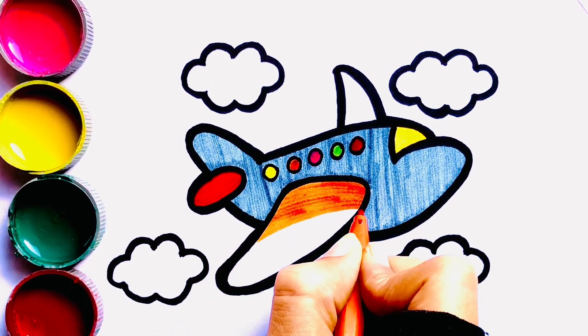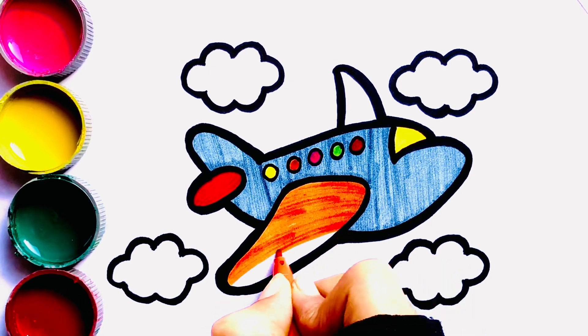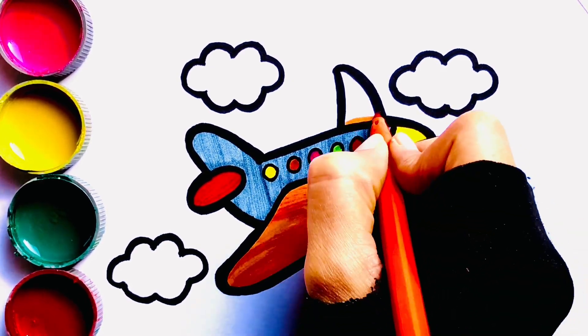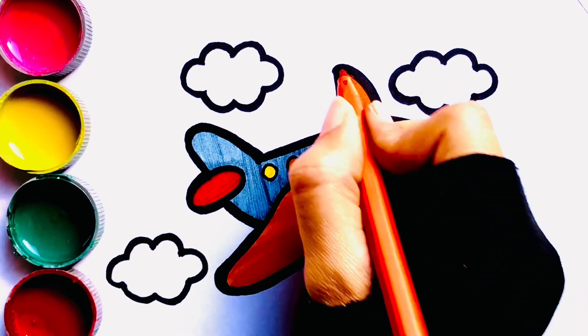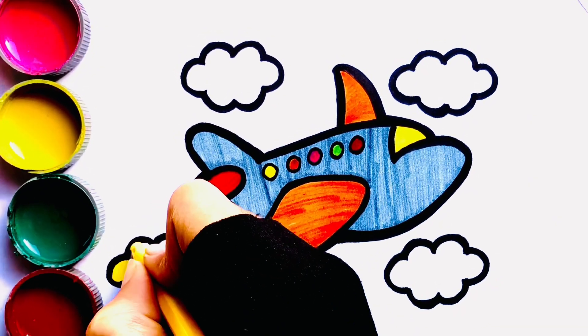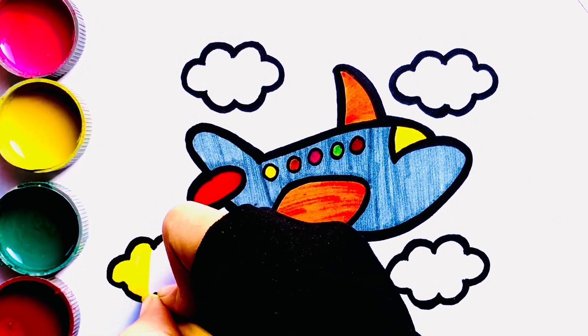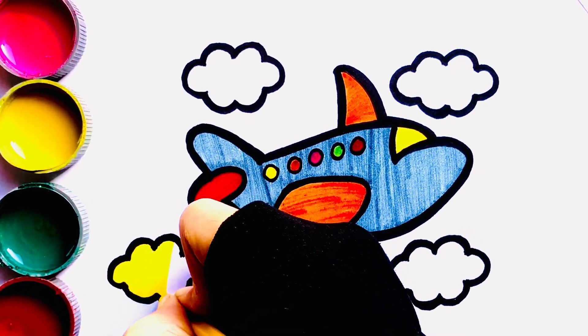Which color is this? This is a yellow color. Which color is this? This is a yellow color.